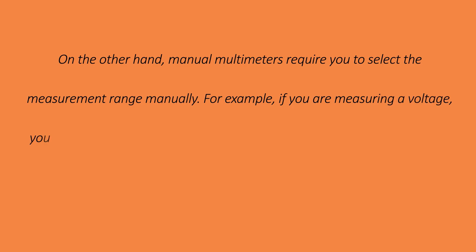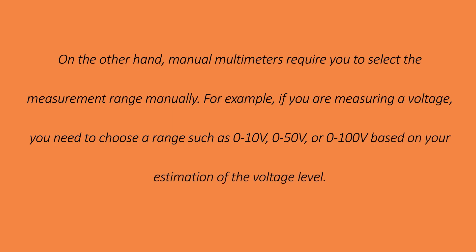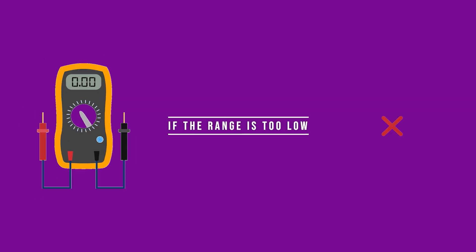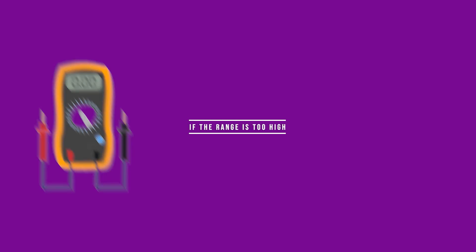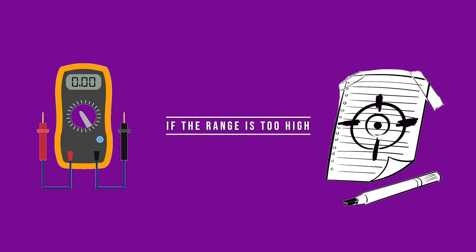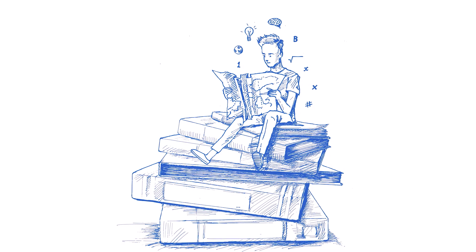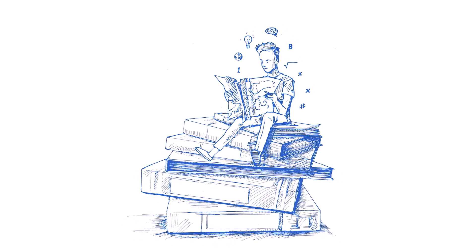On the other hand, manual multimeters require you to select the measurement range manually. For example, if you are measuring a voltage, you need to choose a range such as 0 to 10 volts, 0 to 50 volts, or 0 to 100 volts based on your estimation of the voltage level. If the range is too low, the multimeter might display an overload or error. If the range is too high, the measurement might not be as precise. Manual multimeters are simpler in design and more affordable, but they require a bit more knowledge and experience to use effectively.